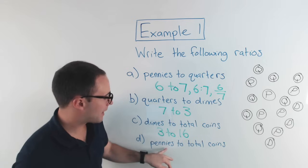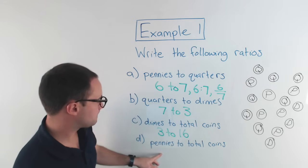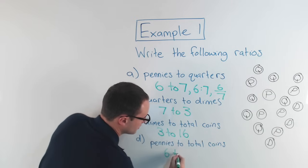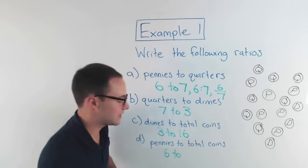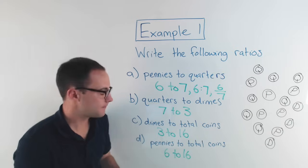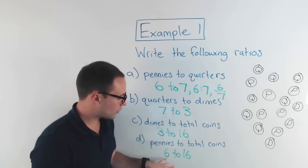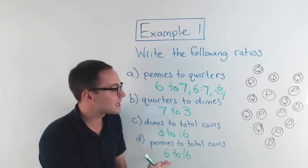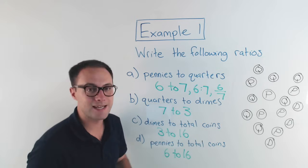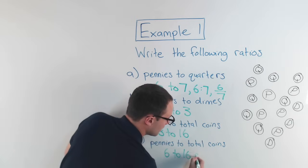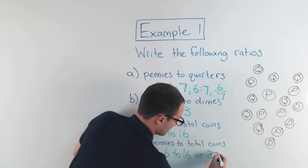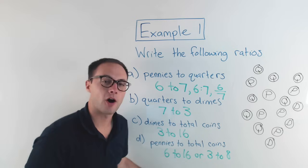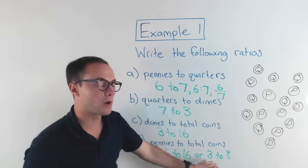And the last one, D: pennies to total coins. I know that there are six pennies, so six to total coins, which was 16. Now, with ratios, you can write it like a fraction, and in fractions we can simplify — same thing with ratios. Six to 16, I could simplify as three to eight. And these ratios are equivalent — they're equivalent ratios, so either one of those would work.